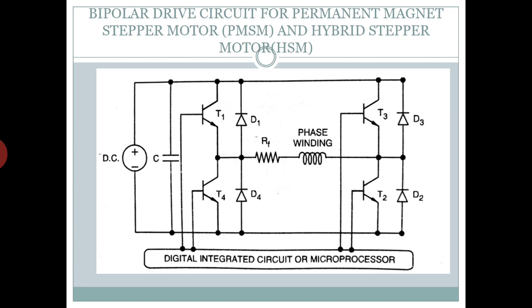This bipolar drive circuit allows rapid rise of current during turn on, along with a wider range of speed control and an instantaneous turn off. The forcing resistance, however, reduces the drive efficiency. The ratings of the switches used depend on the power rating of the stepper motor to be controlled.